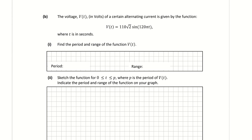Part B: The voltage of a certain alternating current is given by a function. Find the period and the range. Writing the function in terms of A and B: my A is 110 root 2, and B is the coefficient in front of the variable T, which is 120 pi. To find the period, I divide a full rotation of 2 pi by B. So 2 pi divided by 120 pi gives 1 over 60. That's the period.